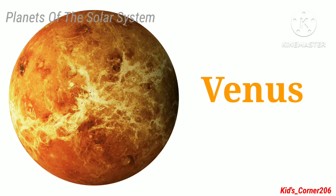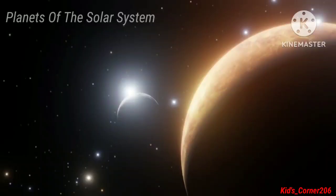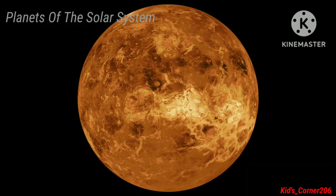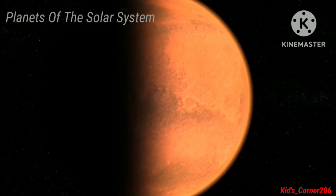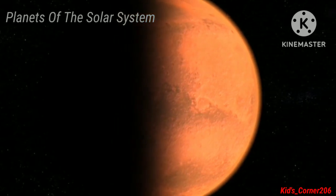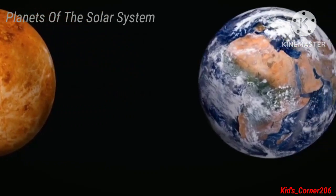The second planet of the solar system is Venus. Venus is the hottest and brightest planet. Venus is also called evening star and Earth's twin sister because its size and shape is similar to Earth.